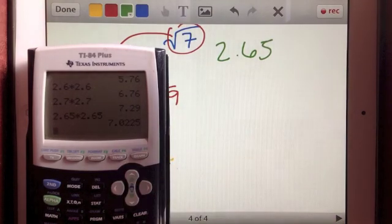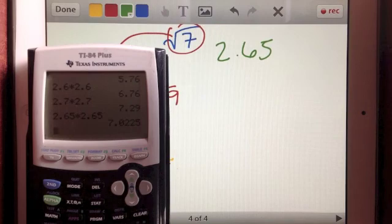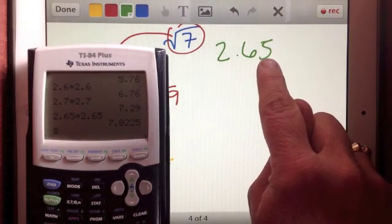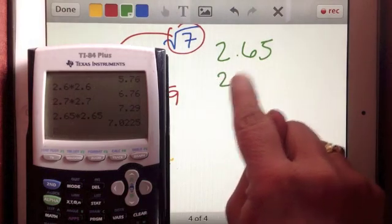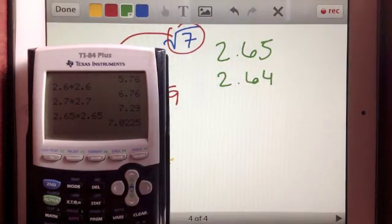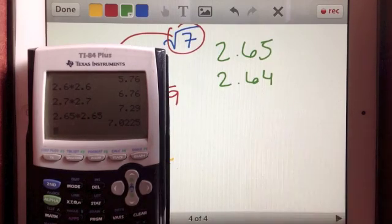So I would like to bump down the hundredths and let's say, let's just try 2.64. Since 7.0225 was pretty close, I'll just go down by one hundredths.